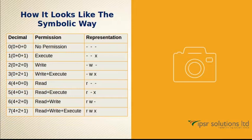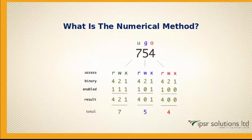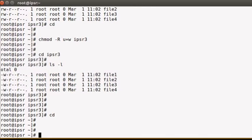Now for the symbolic values: 4 stands for read, 2 stands for write, and 1 stands for execute. When there are no permissions, that means 0, 0, and 0. When there is only execute, that is 1 (or x). This is the symbolic way of representing permissions. The numerical method uses the same values in a format like chmod [u][g][o] filename.